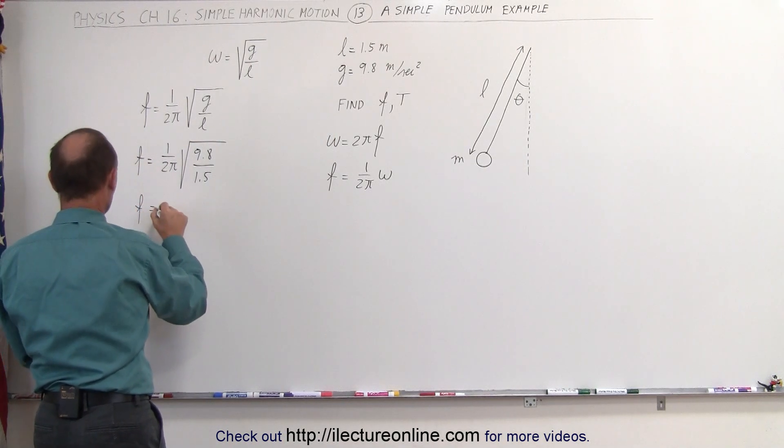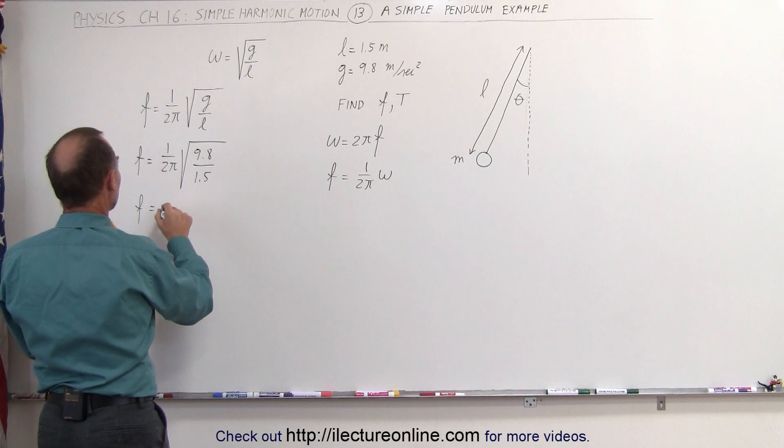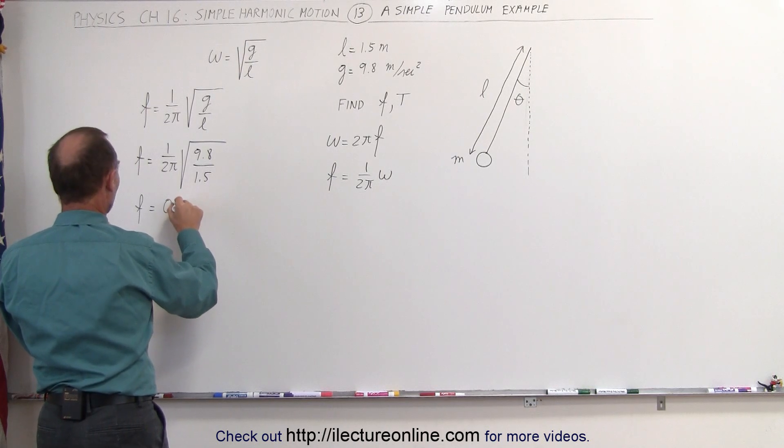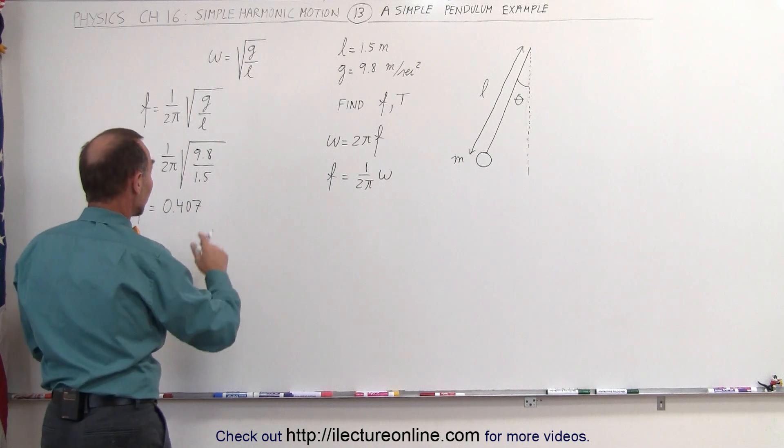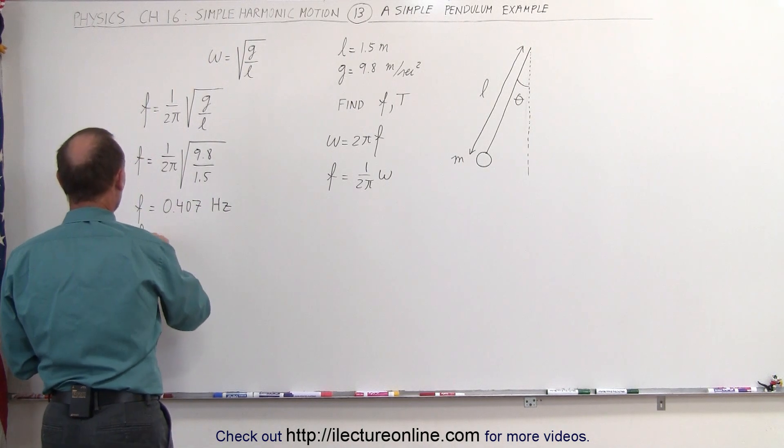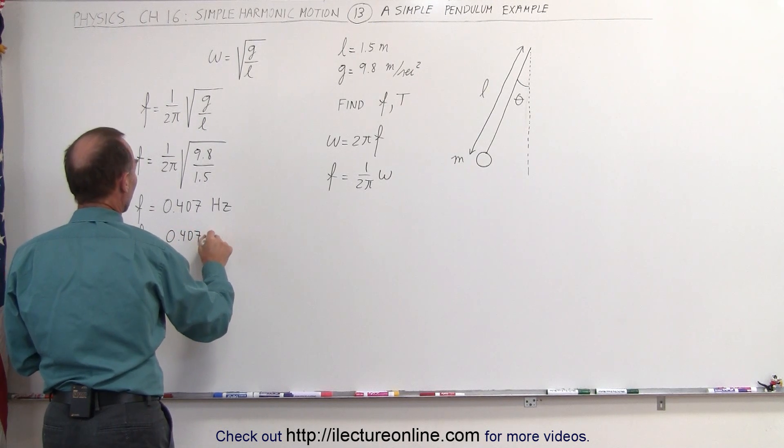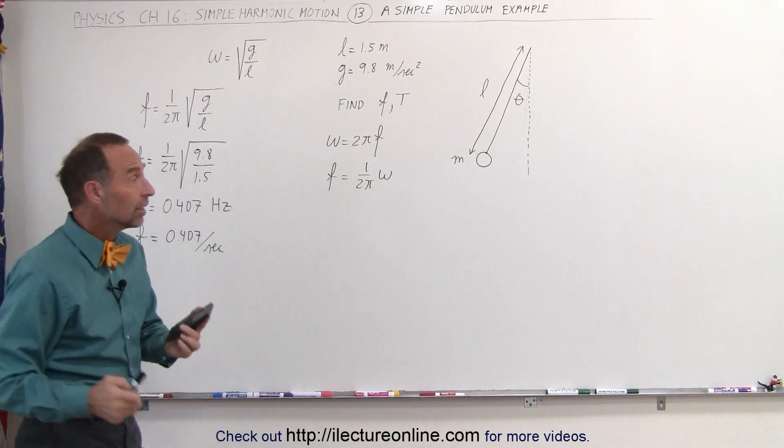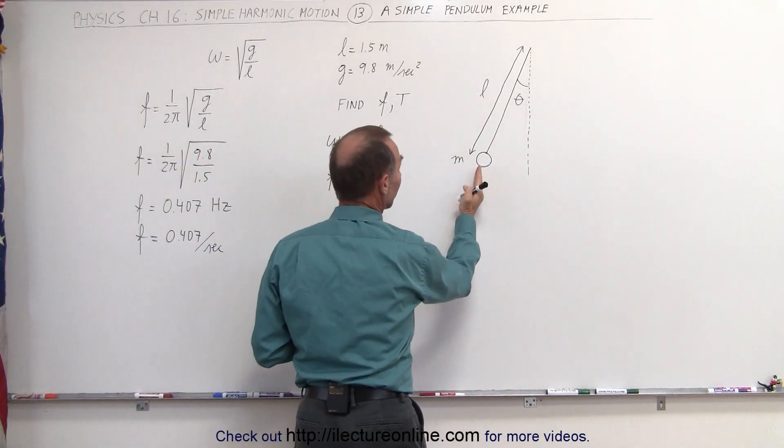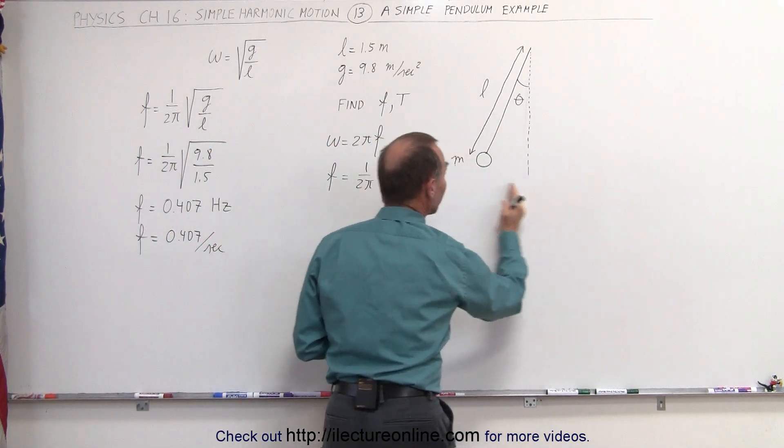So frequency is equal to 0.407 per second, or 0.407 hertz. That means oscillations per second. A complete oscillation is from the maximum amplitude to the other side and back, which would be one complete oscillation.